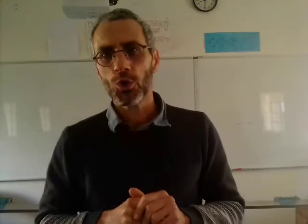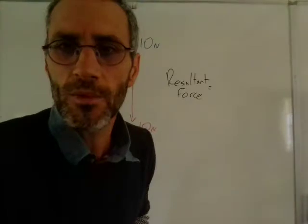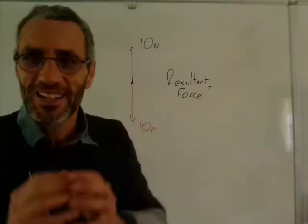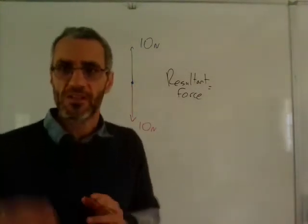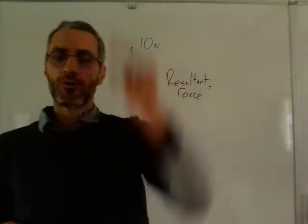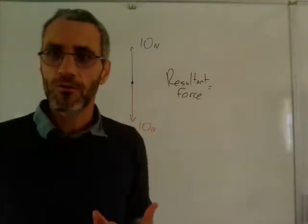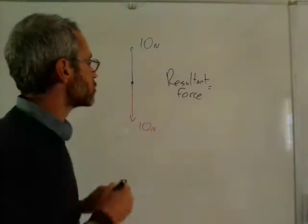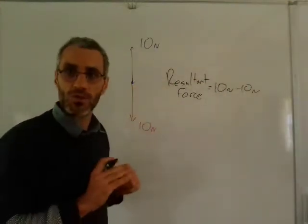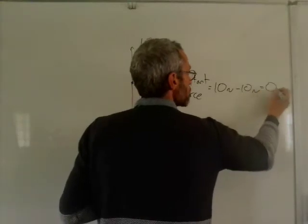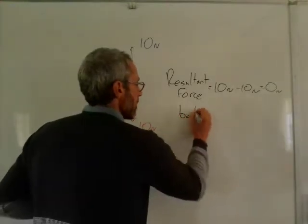Let me just show you something important. We have two forces: 10 newtons up and 10 newtons down. It could be weight pulling down on an object, and the reaction force from the floor pointing upward. What is the resultant force? Each one of you will say that's not a problem — it'll be 10 newtons up minus 10 newtons down. We subtract them because they are in opposite directions, and the force will be zero newtons. The resultant force is zero, and we say that the forces are balanced.